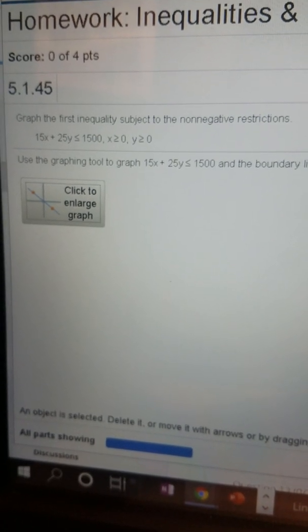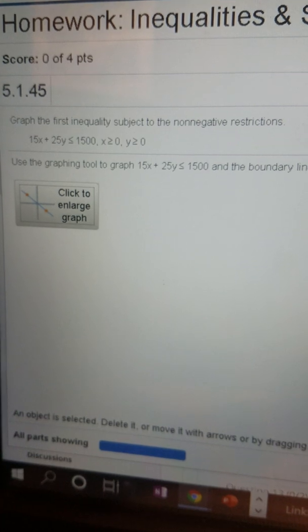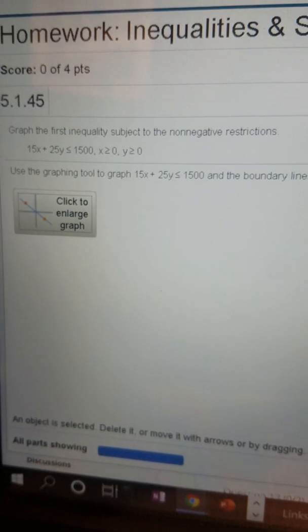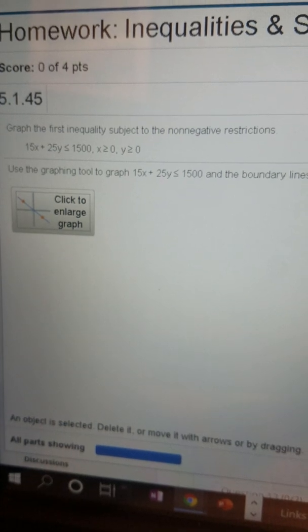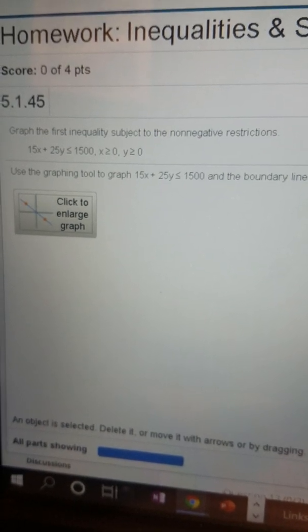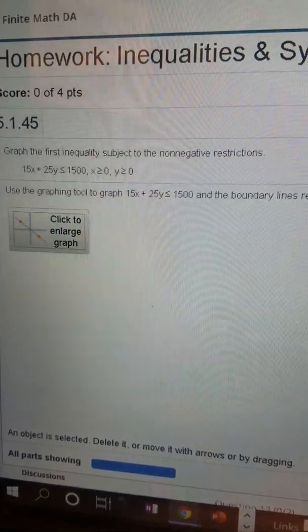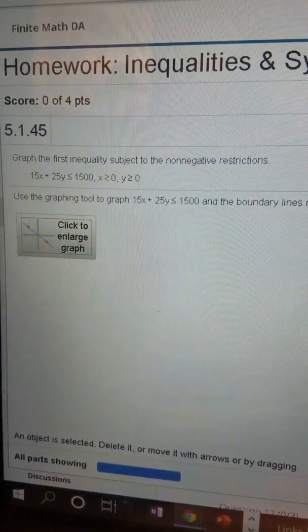The example I have is 15x plus 25y is less than or equal to 1500 and x is greater than or equal to 0 and y is greater than or equal to 0. Those last two are non-negativity constraints which will restrict our solution set to the first quadrant.